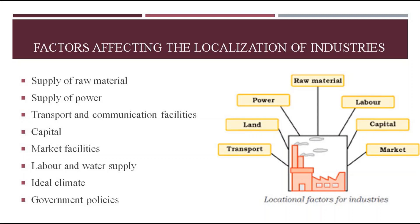Now, what are the factors affecting the localization of industries? To locate an industry, several factors are important. Supply of raw material is necessary — without raw material it is not possible, just like food to the industry. Supply of power, that is energy, is also necessary — without that, industries definitely cannot run. Transport and communication, the nerve system, is very important.